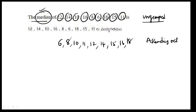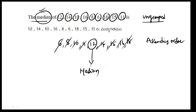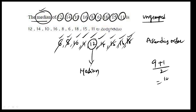Descending order will ask you, ascending order will ask you. So which number is given? Count is 3, 4, 5, 6, 7, 8, 9. So 9 numbers — that is 9 plus 1 by 2.